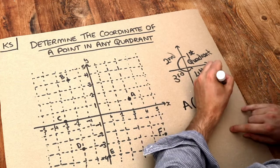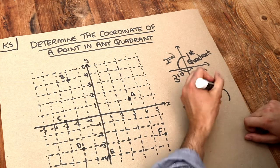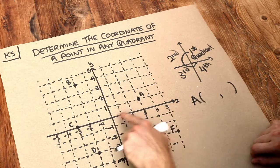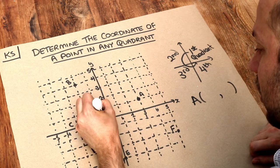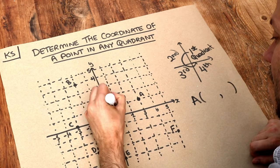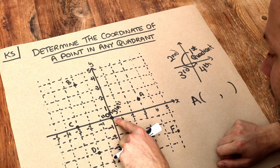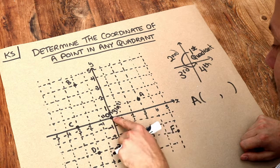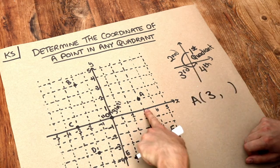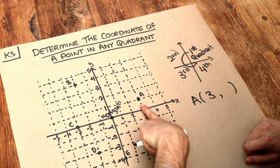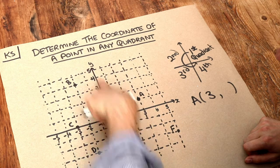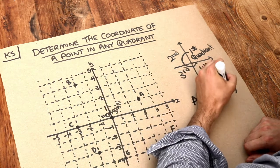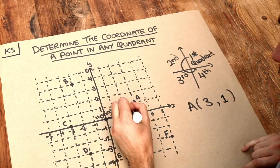So let's look at the first coordinate. Remember coordinates always go in brackets with a comma in the middle. Starting from the origin here, how far do we have to go along the x-axis before we get directly under point A? Well, we can see we have to go along three. And then we have to go up one, so that's one in the y direction, so the y value is one.